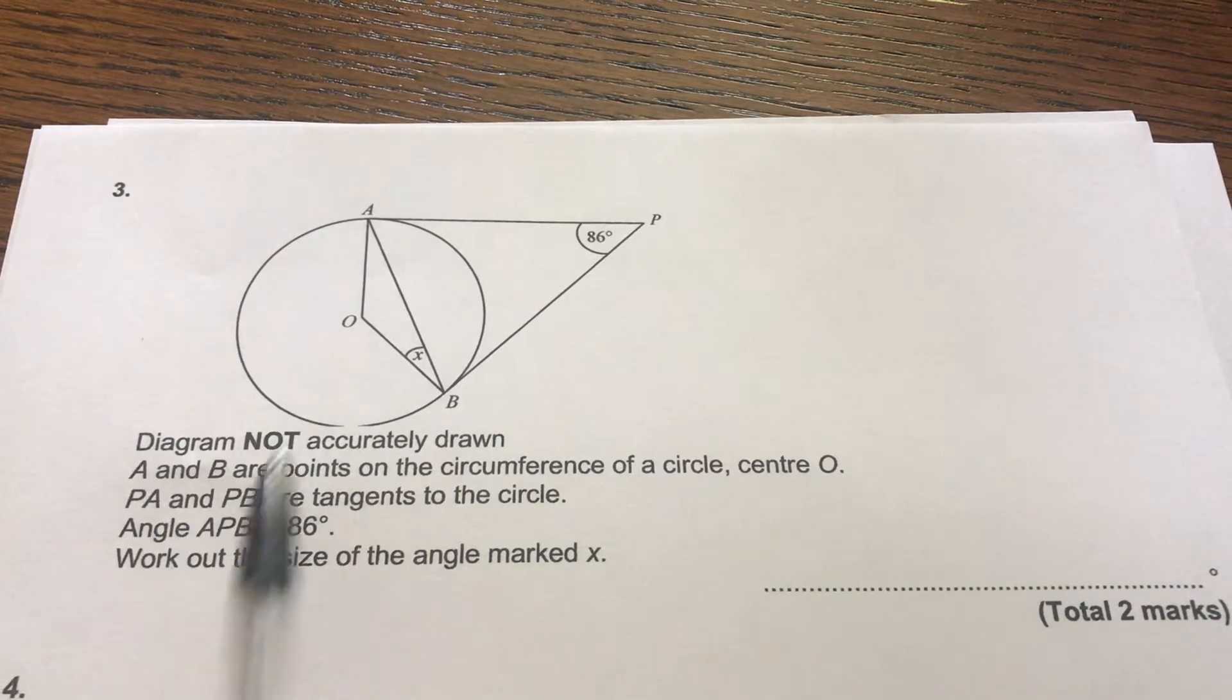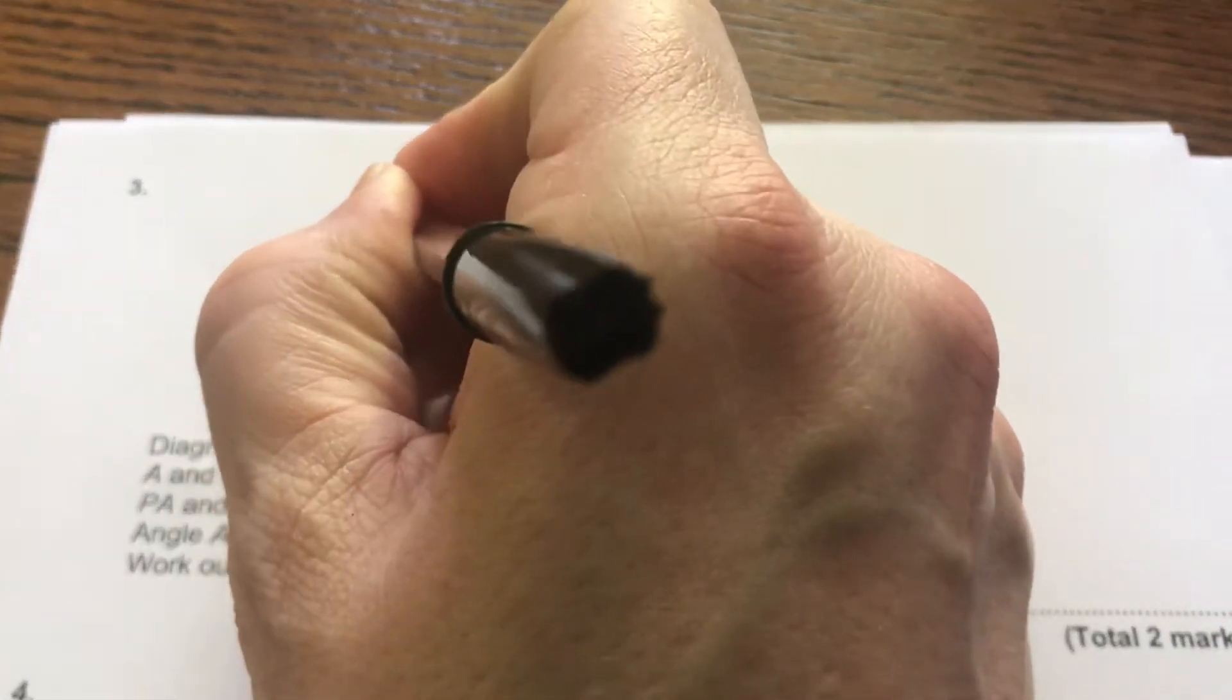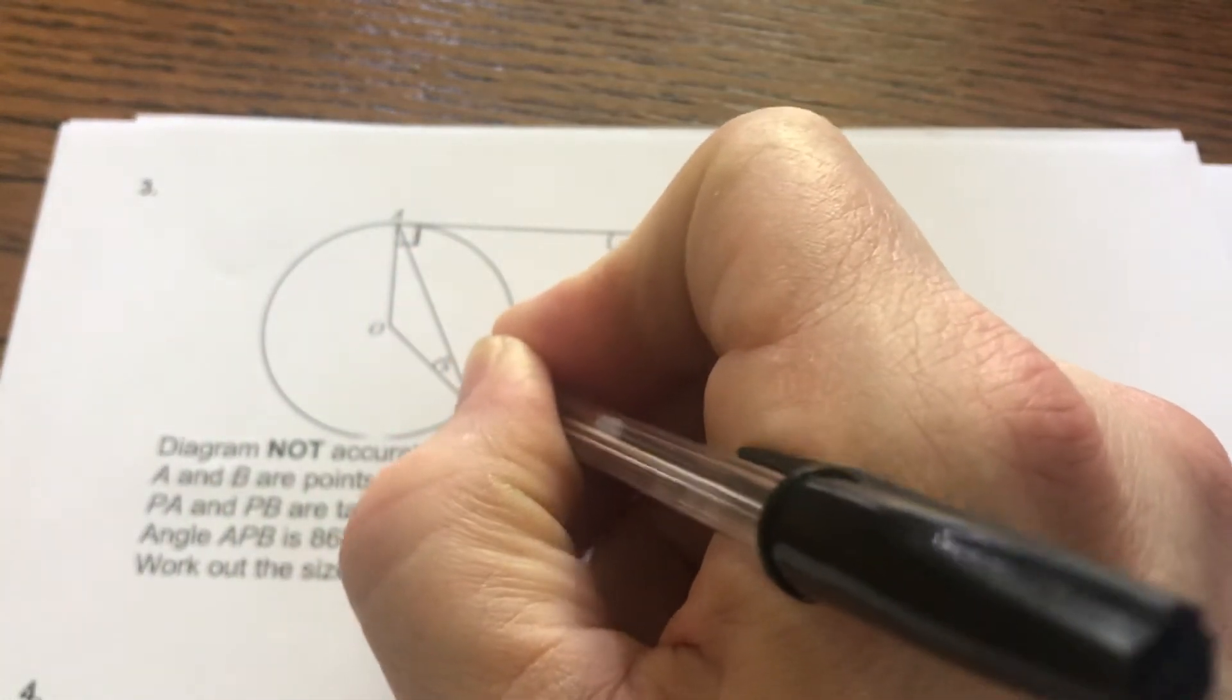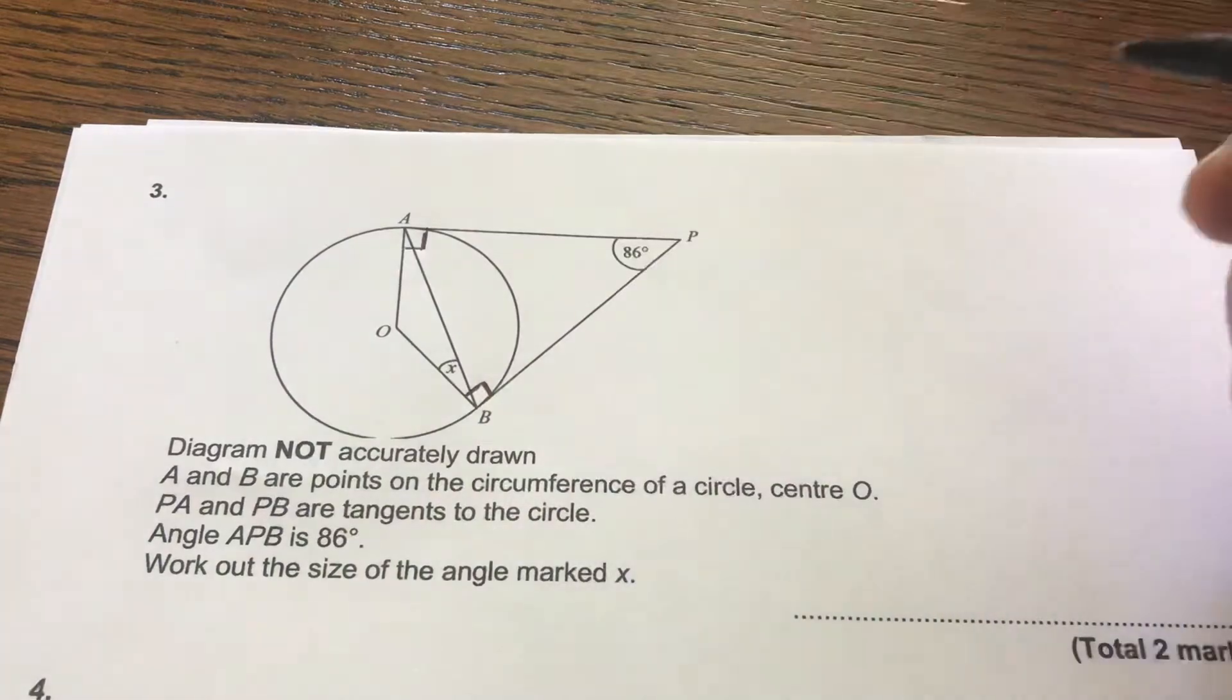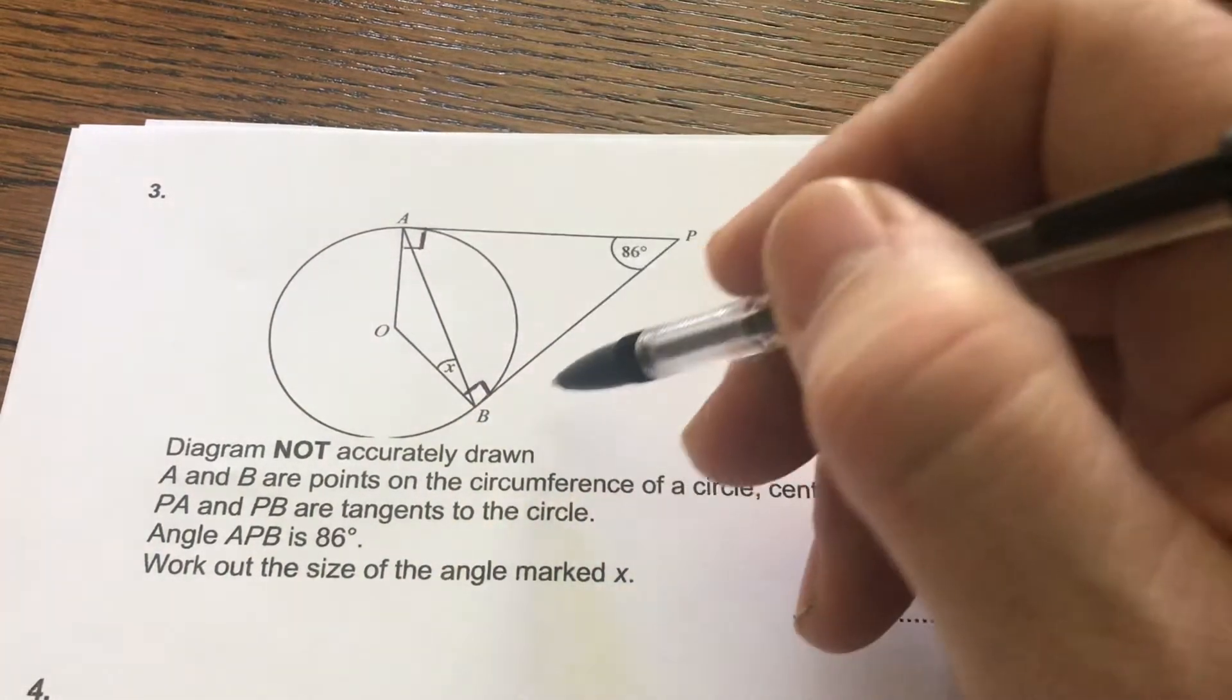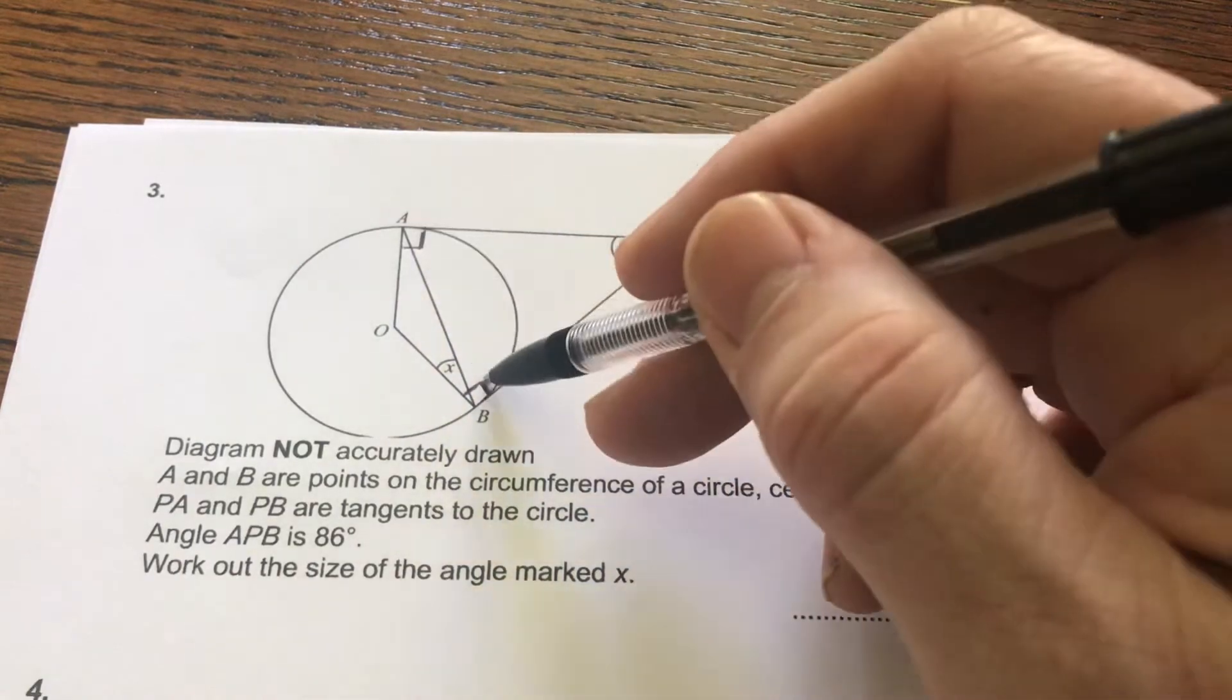Now we see we have tangents here. Now one important thing about the tangent is this. The main thing is they meet the circle at 90 degrees, so you want to be putting those there. So you know that's a right angle.